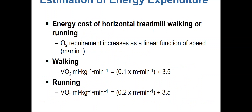All of these measurements provide an estimation of energy expenditure. We need to determine how much energy is being expended, especially in instances of weight loss or weight gain where we're managing energy balance. Understanding the energy expenditure of different activities allows us to know exactly how much energy is expended while exercising. For example, the energy cost of horizontal treadmill walking or running — the oxygen requirement increases as a linear function of speed.